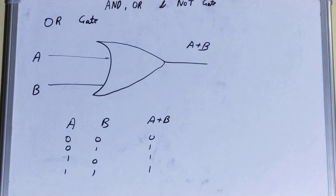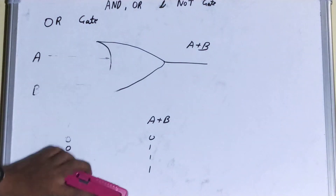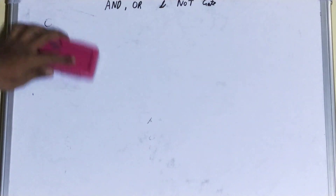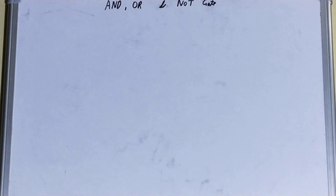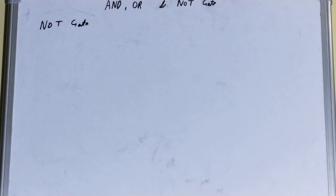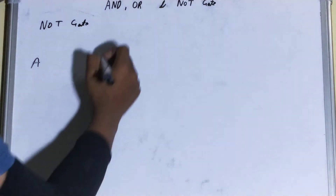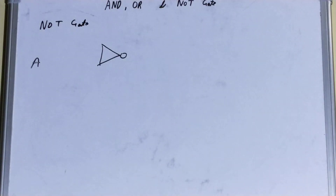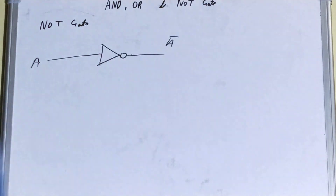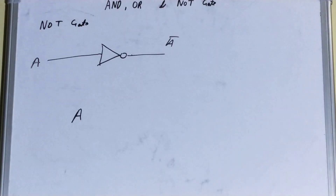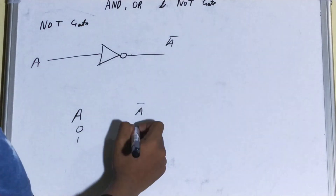Now let's see the NOT gate. The NOT gate is also called the complement gate because it just puts a complement on that particular variable. It is drawn as a triangle with a small circle at the output. When we pass input A through it, we get the complement — A-not. The truth table is simple: if the input is zero the output is one, and if the input is one the output is zero.